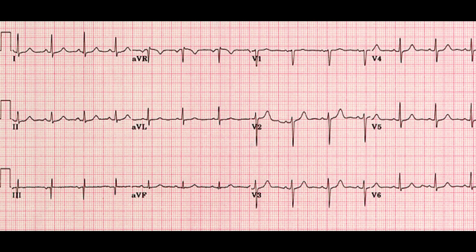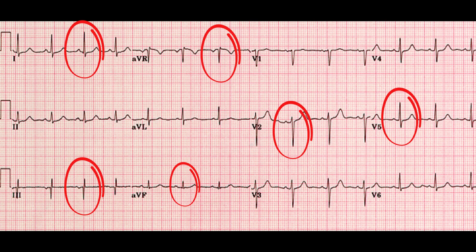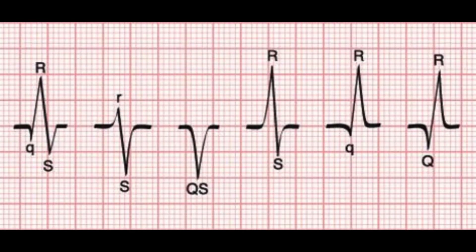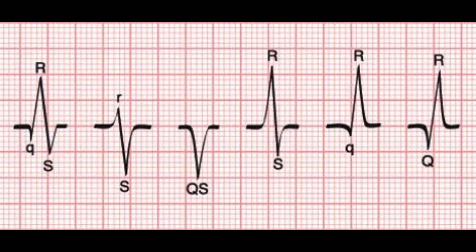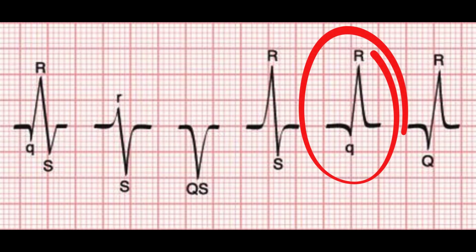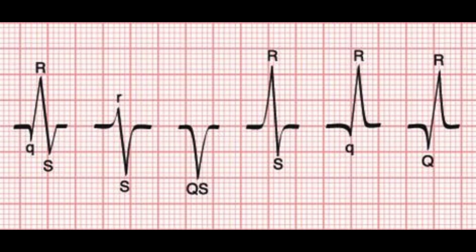If you look at this 12-lead EKG, you will notice the normal QRS complex variations in each of the leads. In this illustration, these are the common QRS complex variations. You can have the regular QRS complex, an RS complex which lacks the Q wave, a QR complex which doesn't have the S wave, or a QS complex which doesn't have an R wave.